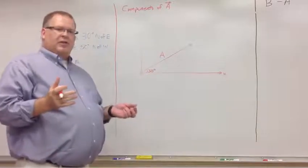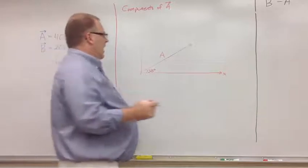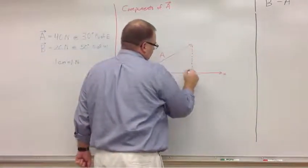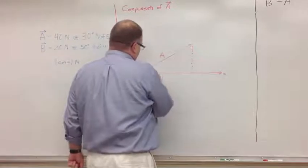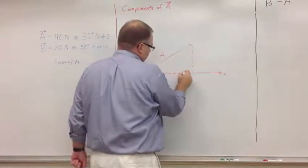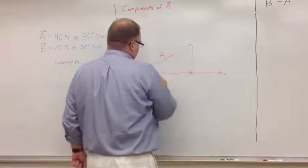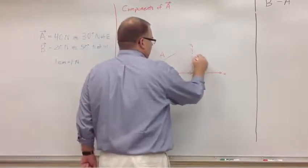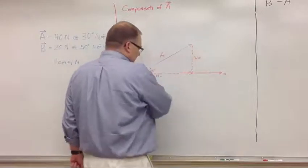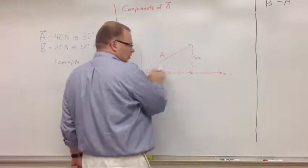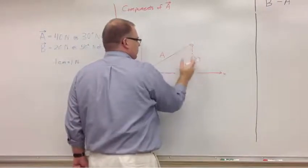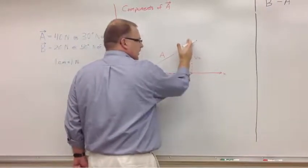And again, what we do with components is we're looking at how far the vector went out horizontally and how far it went vertically. So what I'm going to do is draw my horizontal component and my vertical component. So how far directly along the horizontal direction did it go and how far up the vertical direction did it go?